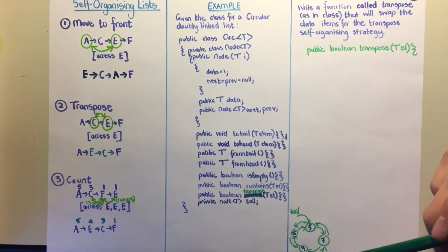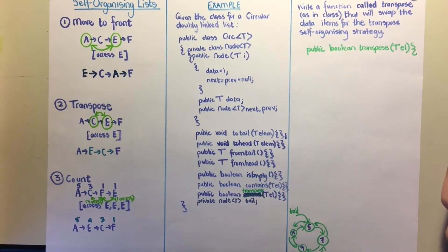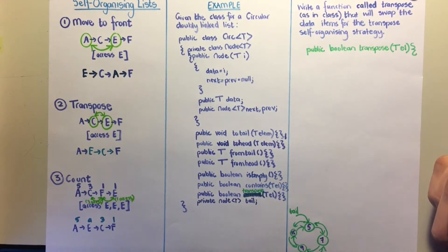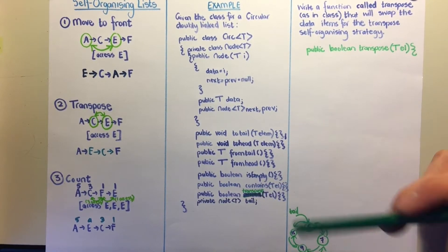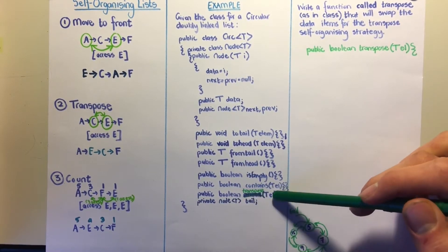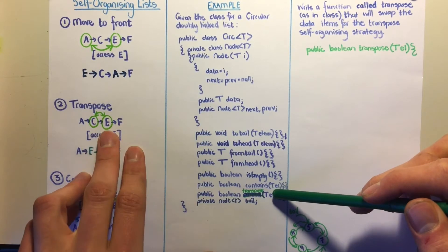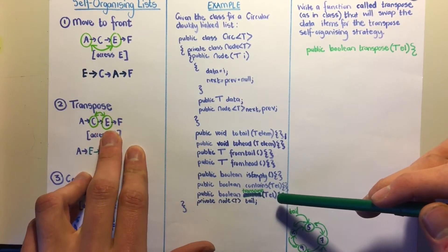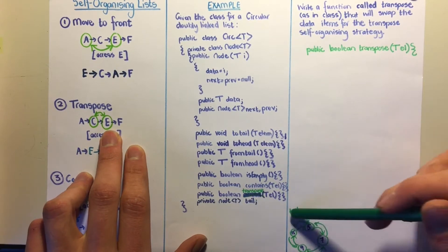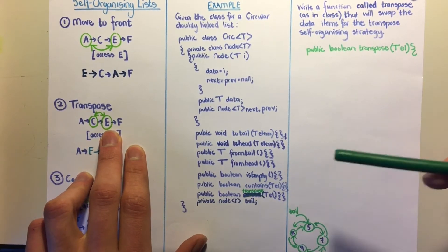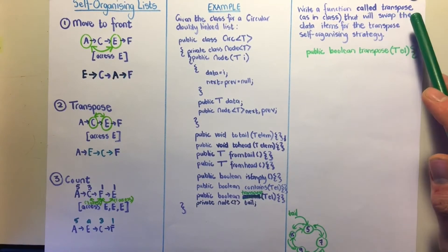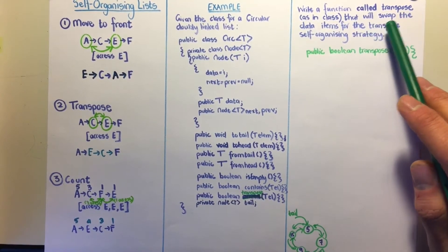We assume all provided methods are already implemented except the one we will write. The given methods include: insert at tail, insert at head, delete from tail, delete from head, check if empty, check if an element is contained in the list, and the transpose self-organizing strategy. We only have a direct pointer to the tail of the list.